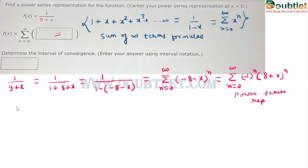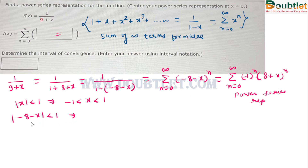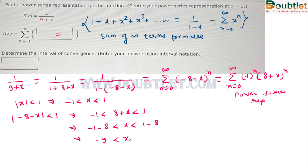Now we have to find the interval of convergence for this series. We know that |x| < 1 for the infinite geometric series, meaning x varies from minus 1 to 1. If we replace x with (minus 8 minus x), then taking the absolute value gives us |8 + x| < 1. Subtracting 8 from both sides: minus 1 minus 8 less than x less than 1 minus 8, which gives minus 9 less than x less than minus 7.